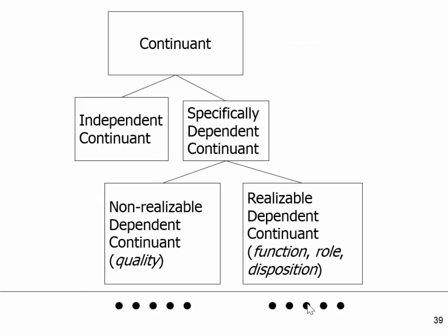Moving down the hierarchy, we have what we now call specifically dependent continuants. Your headache is dependent upon your head specifically — you can't share your headache with someone else; they have their own headache. Similarly, your skin color is dependent upon you. Somebody may have exactly similar skin color, but they still have their own skin color. That's specific dependence.